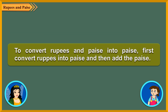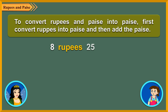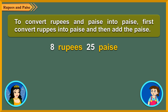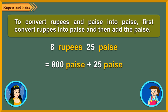And to convert Rupees and Paise into Paise, first convert Rupees into Paise and then add the Paise. For example, to convert 8 Rupees 25 Paise into Paise, we first convert 8 Rupees into 800 Paise, then add 800 Paise to 25 Paise.